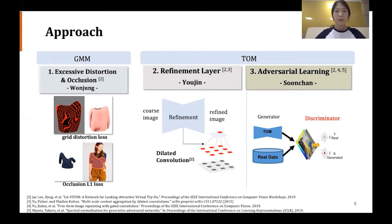For the second approach, we added a refinement layer to make a coarse image into the refined image. And for the refinement layer, we used dilated convolution to enable wider receptive field, which is already used in many coarse-to-refine networks. With the ablation study, we found out that training both TOM and refinement layer separately performs the best.